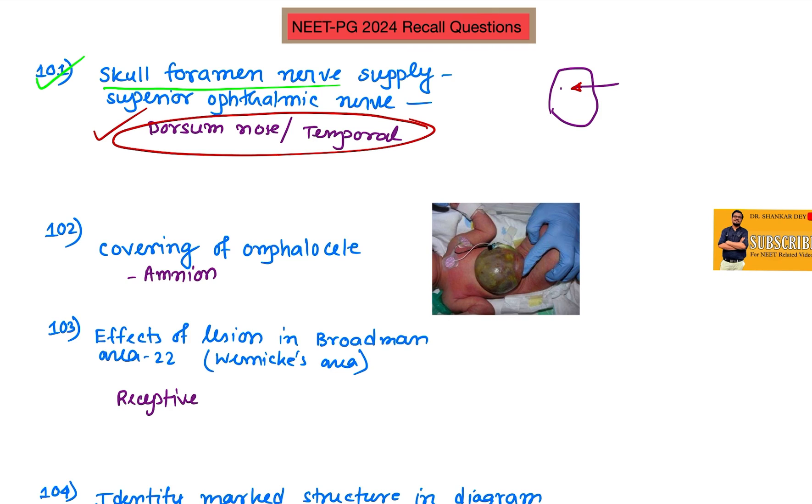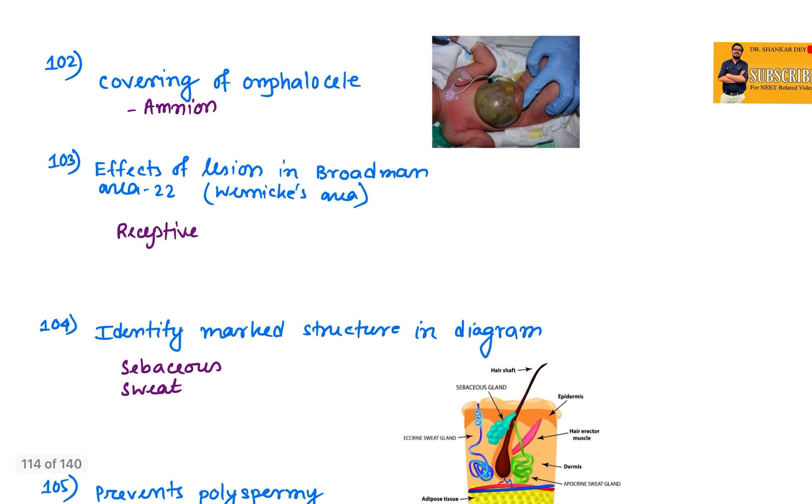I think this was an image-based question. Question 102: covering of omphalocele - it will be amnion. Whether amnion option was there or not, the better option is amnion as it's the covering of omphalocele.